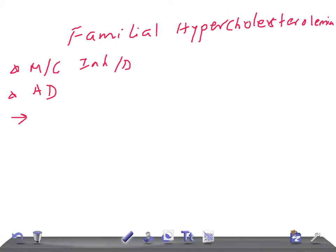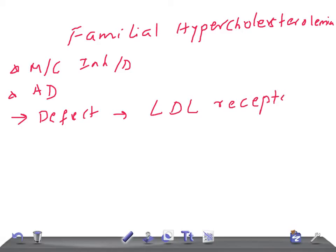The defect in familial hypercholesterolemia lies in a mutation in the LDL (low-density lipoprotein) receptor gene. This gene is located on chromosome 19. In examinations, if they give a history of myocardial infarction in the second decade of life or late teens, think of familial hypercholesterolemia as the cause. A useful mnemonic: chromosome 19, MI at age 19.